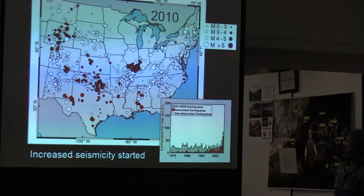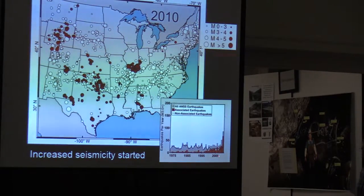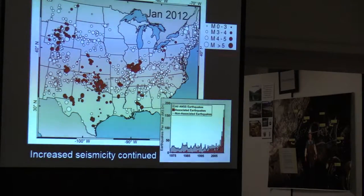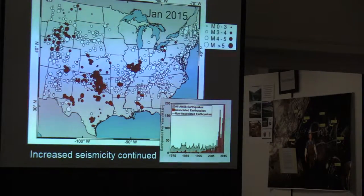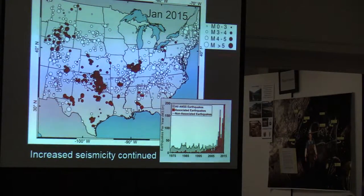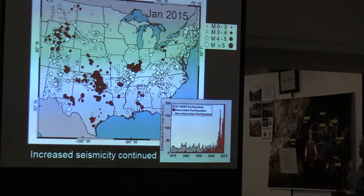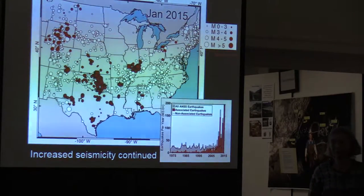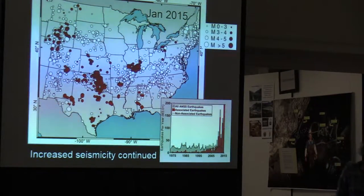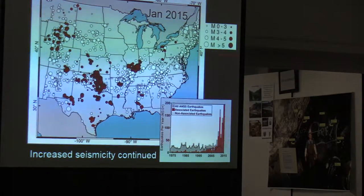Starting in the late 2000s, we see increased seismicity beginning to take off — through 2010, 2012, 2013, 2014, and 2015. The vertical scale goes to 200. In 2015, earthquakes did not stop, but the graduate student was about to graduate, so the plot stopped — the earthquake didn't. Later on we did update this plot.